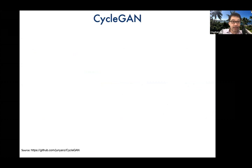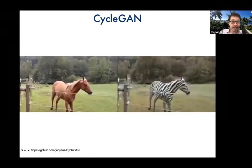This can also be transferred to videos. On the left side you see the original and on the right side you see what the GAN did — it was instructed to make a zebra out of the picture.